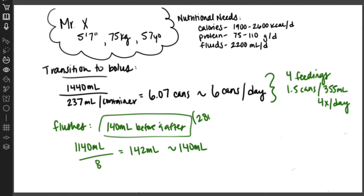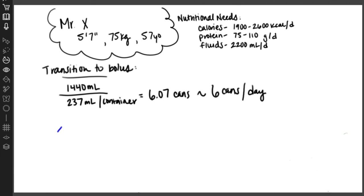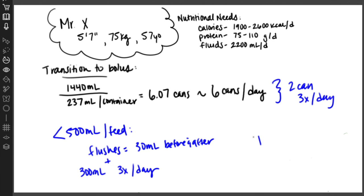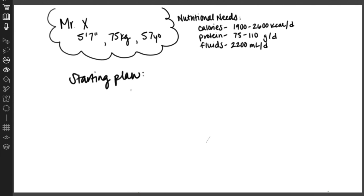Our total volume here with the feeding and flushes four times a day is 635 milliliters, which would probably be better tolerated. To get us below that 500 milliliter volume per feeding recommendation, we could do two cans three times a day, but decrease our flush volume to 30 milliliters before and after. Then we would have Mr. X give himself another 300 milliliters of flushes three other times throughout the day, or maybe with his medications. This would bring our total volume for each feeding down to 534 milliliters, which might be better tolerated. Just to start and see what Mr. X can tolerate, we are going to choose to start him on 355 milliliters or that one and a half cans four times a day, with 140 milliliters before and after each flush and monitor his tolerance, since that's close to our 500 milliliter recommendation.